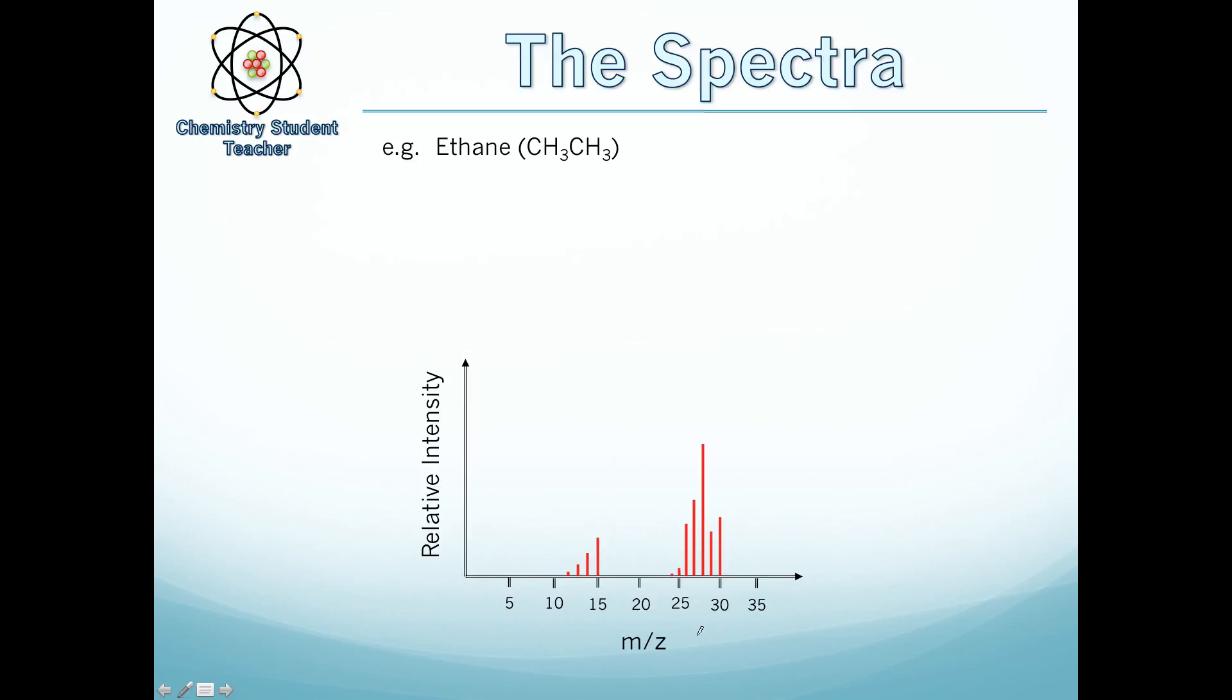First thing is m/z is the x-axis, and the relative intensity is the y-axis, so relative intensity is just saying how much is there compared to the other things. Now m/z can be linked directly to molecular mass. So we've got an m/z value of 30. This is the highest.